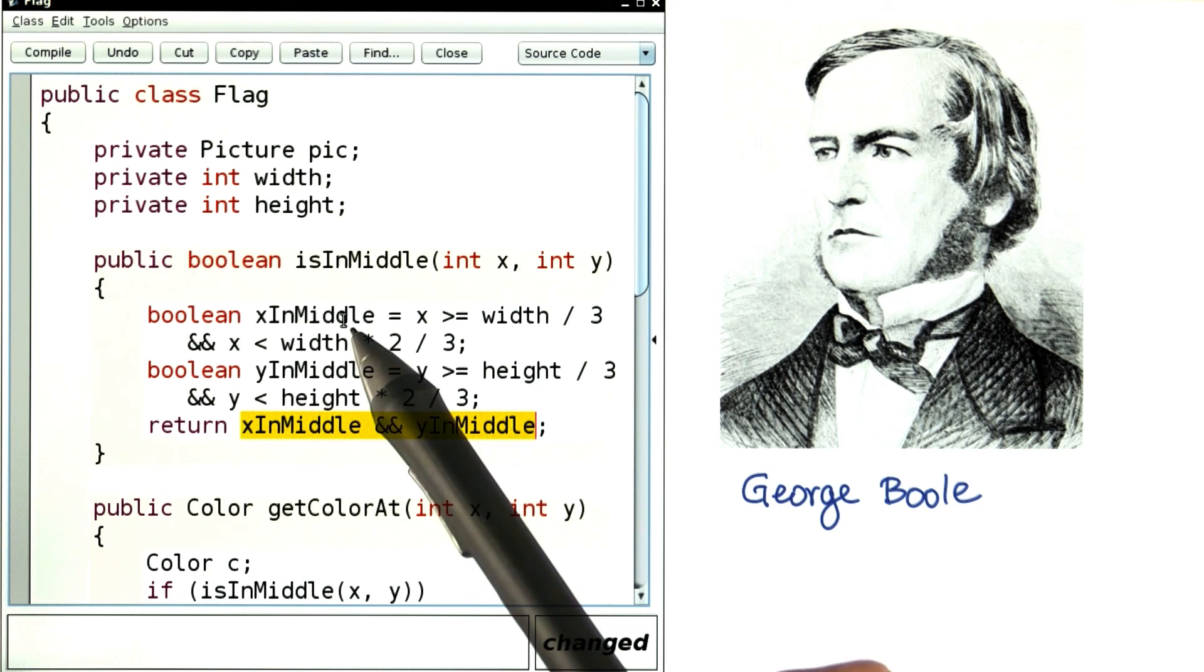Generally, you use a Boolean variable if you want to remember a value that's true or false so that you can use it later. Sarah has an example of that for you in a different context.